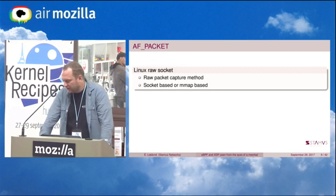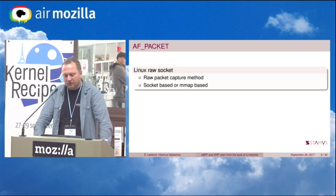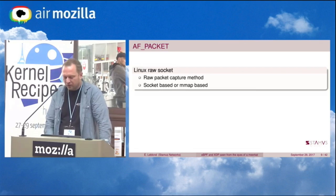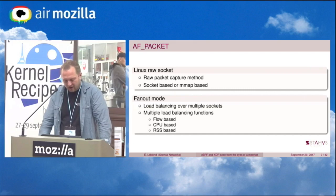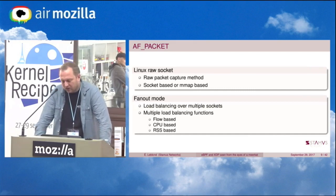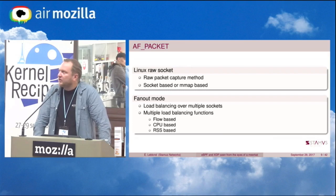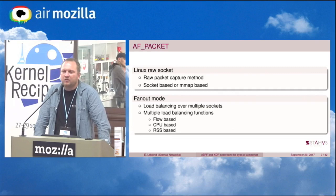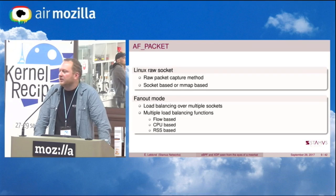Suricata is using AF_PACKET, which is the raw socket system, and we use the memory-mapped version. We are also using fanout, which was introduced around kernel 3.16, which allows Suricata to get multiple threads reading one single interface. Because if you just have one thread reading traffic on one interface, you cannot really do correct load balancing, so it does not scale well.